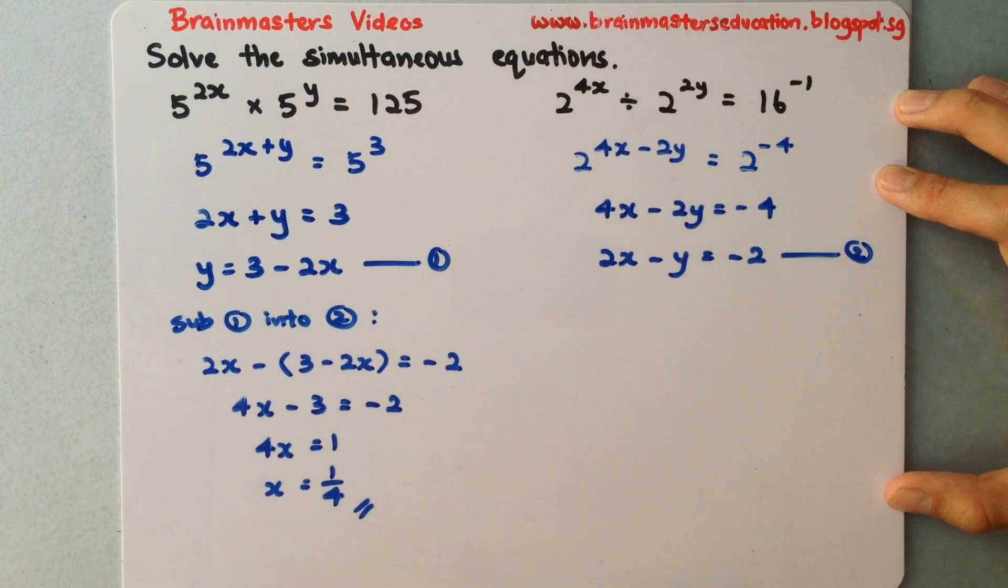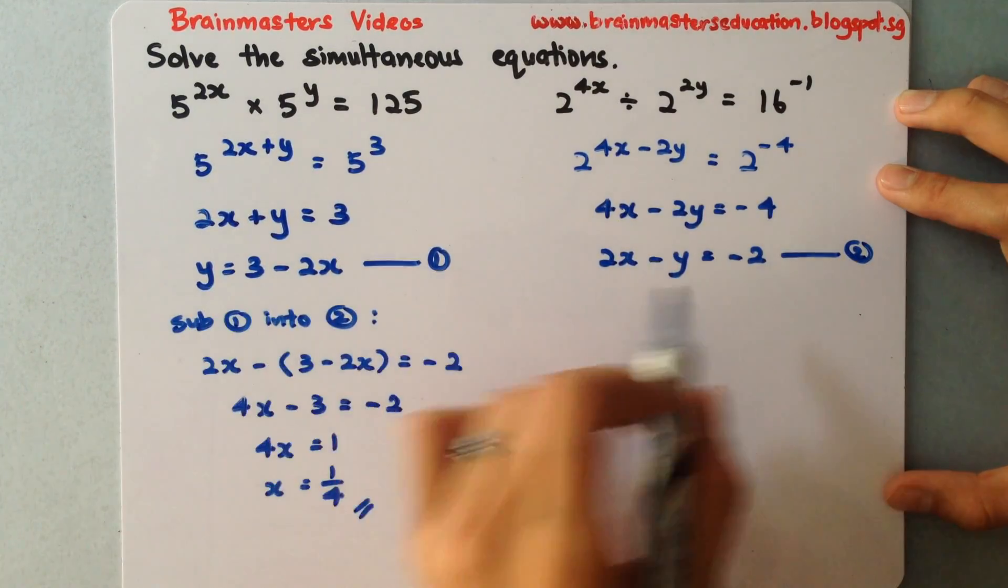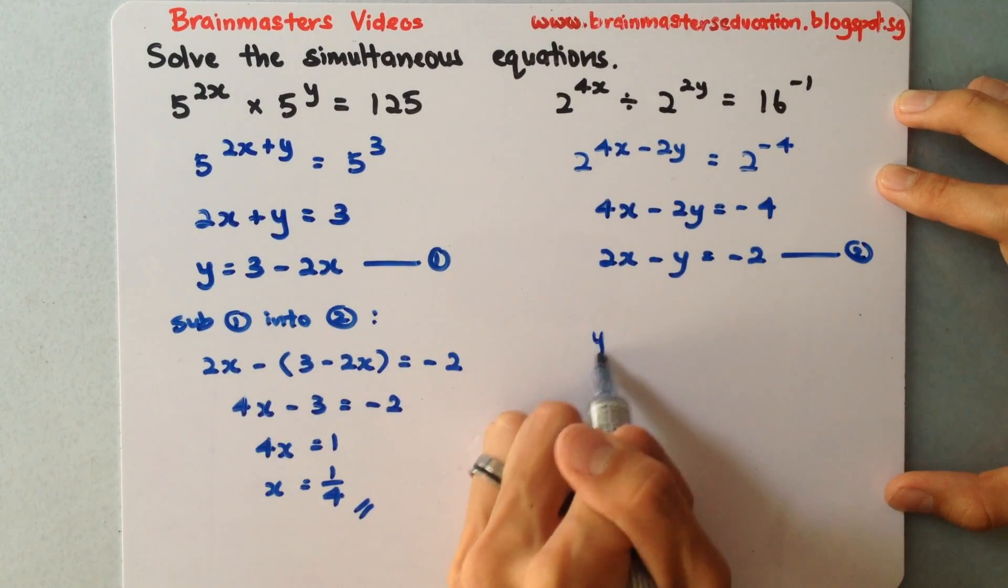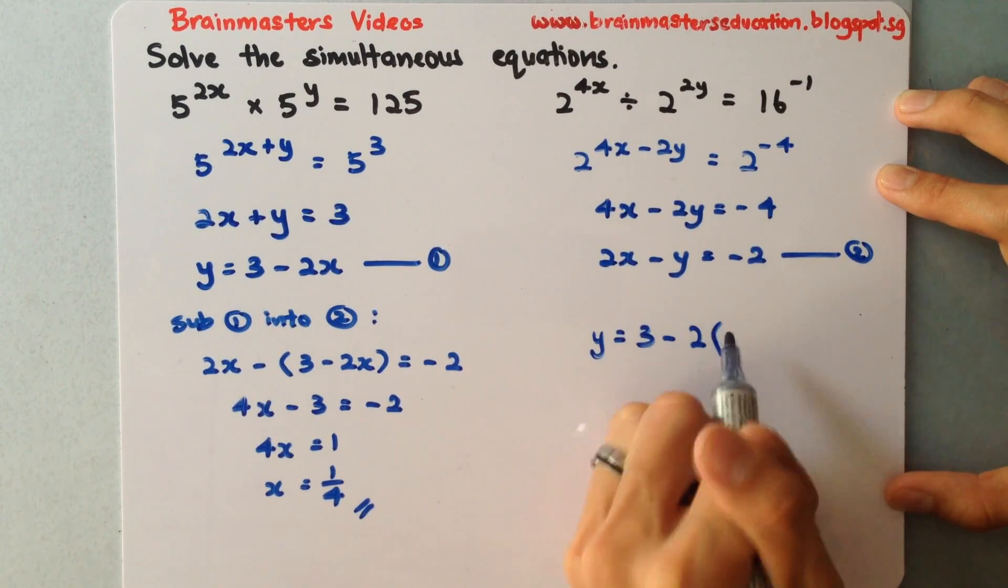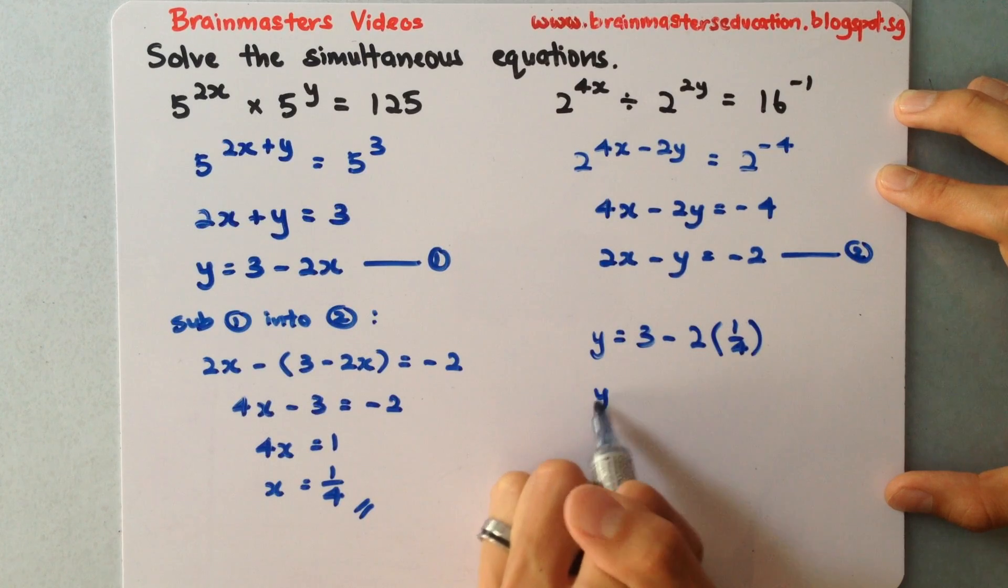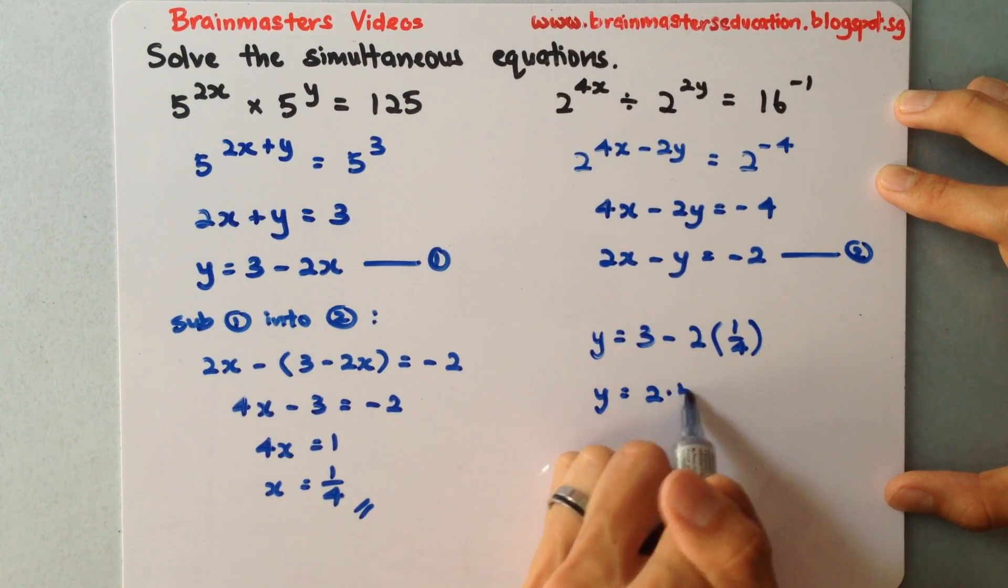Now, I've got my answer for x. So I'll put it in either one of the equations to solve for my y. Of course, the easiest will be this. So y equals 3 minus 2 multiplied by 1 over 4. This will give me half. So y is actually equals to 2.5.